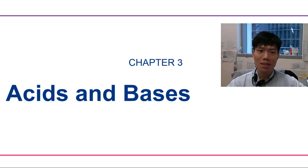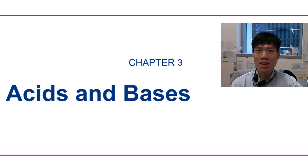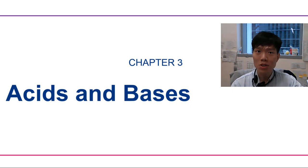Hi students, so here we are arriving at chapter 3, acids and bases. You have done this previously. For acids and bases, there are three kinds of definitions: the Bronsted-Lowry, the Lewis, and the Arrhenius.